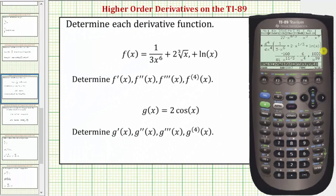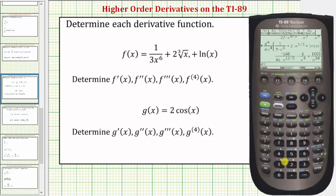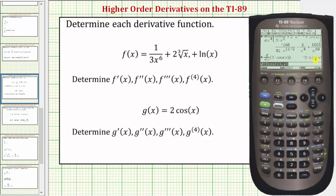Let's look at one more example. Here we're given g of x equals two cosine x, and again we're asked to find the first through fourth derivatives. Let's go through the process again: press F3 for the calculus menu, one for differentiate, enter the original function — two cosine x, where cosine is Second then Z — close parenthesis, comma the variable x, close parenthesis. This gives us the first derivative: g prime of x equals negative two sine x.